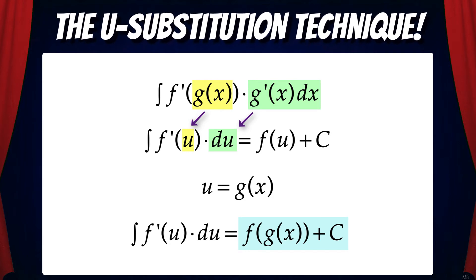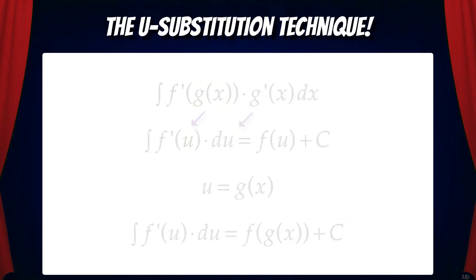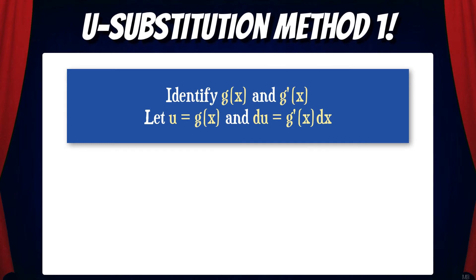And this brings us to u-substitution method 1. We're going to identify the g function and g prime of x. Then we'll let u equal g of x and du equal g prime of x dx. This will let us transform the integral of f prime of g of x times g prime of x dx into f prime of u du.